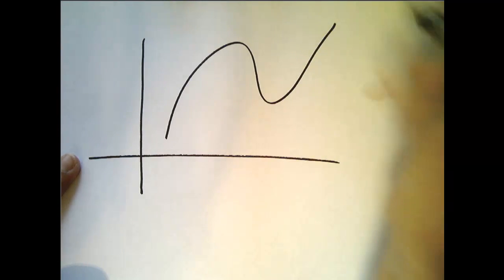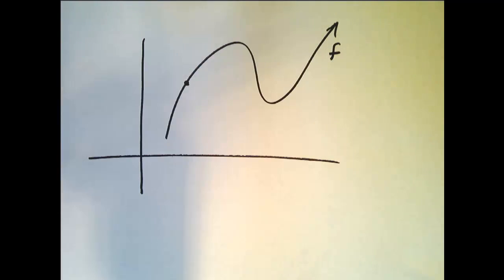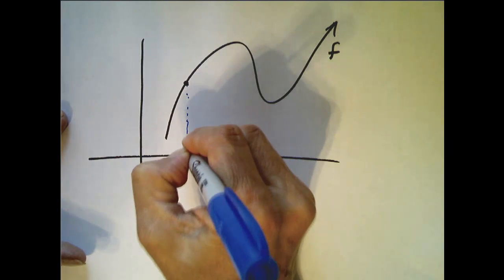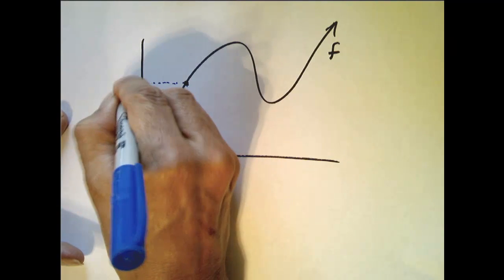Okay, let's draw that same graph, or pretty close to it. So this is my function f. This right here will be the point (a, f(a)). There's a, there's f(a).